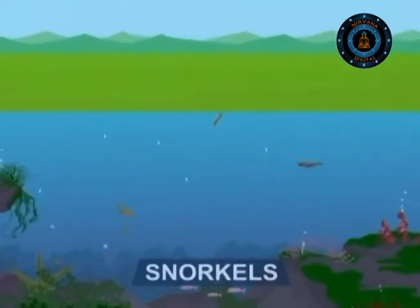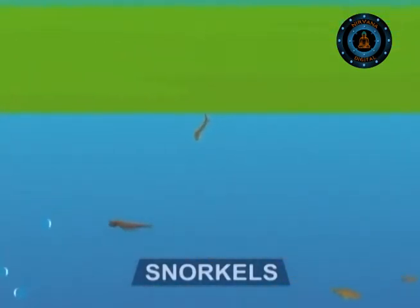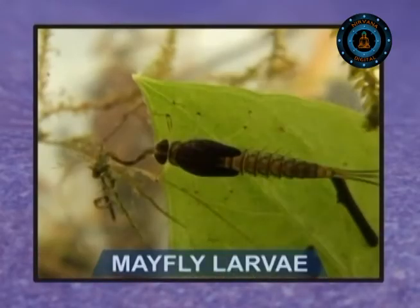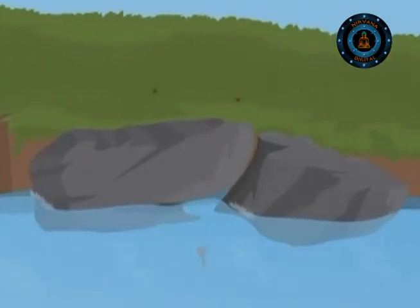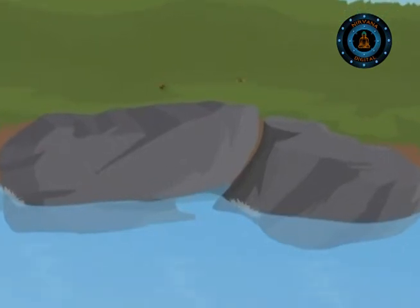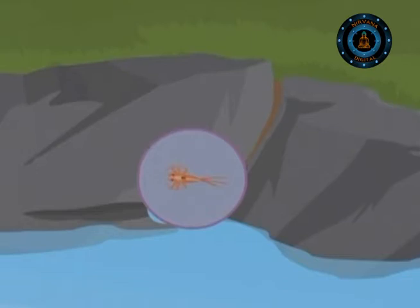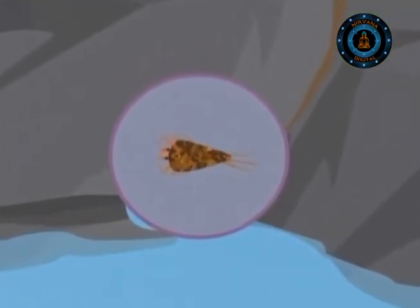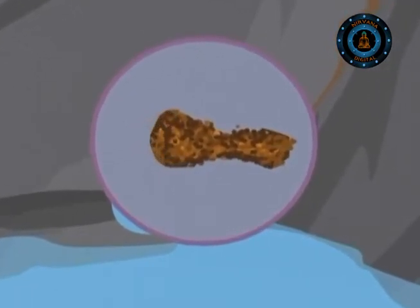Some insects have snorkels for breathing through the surface; others carry air bubbles around them. Mayfly larvae that live in rushing streams often have flat bodies, which help them wriggle under rocks and avoid the strong water current. A few caddisfly larvae build themselves protective cases out of small stones or debris, and some even build underwater nets to catch prey.